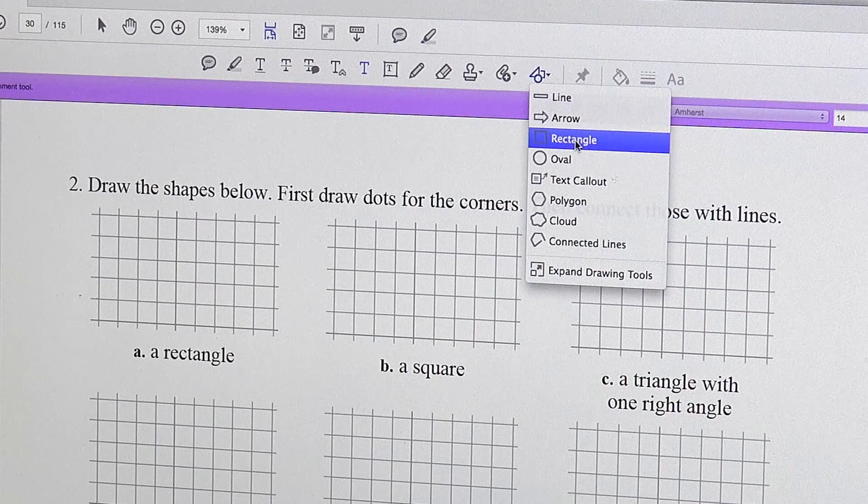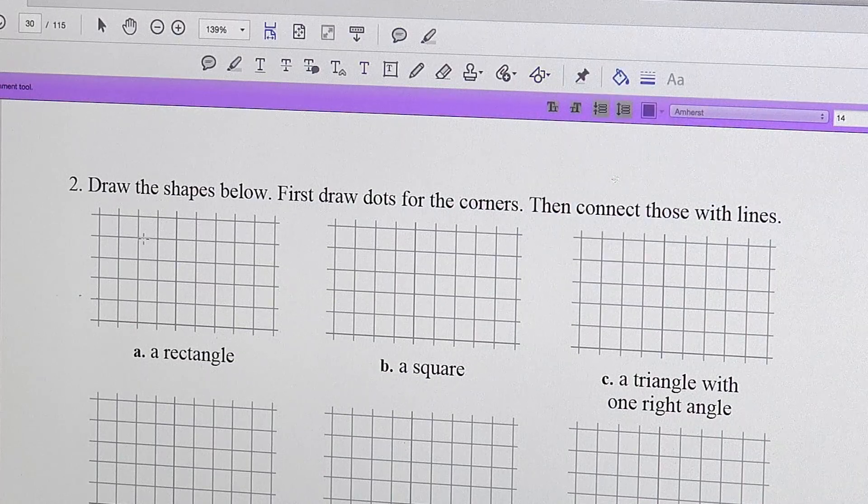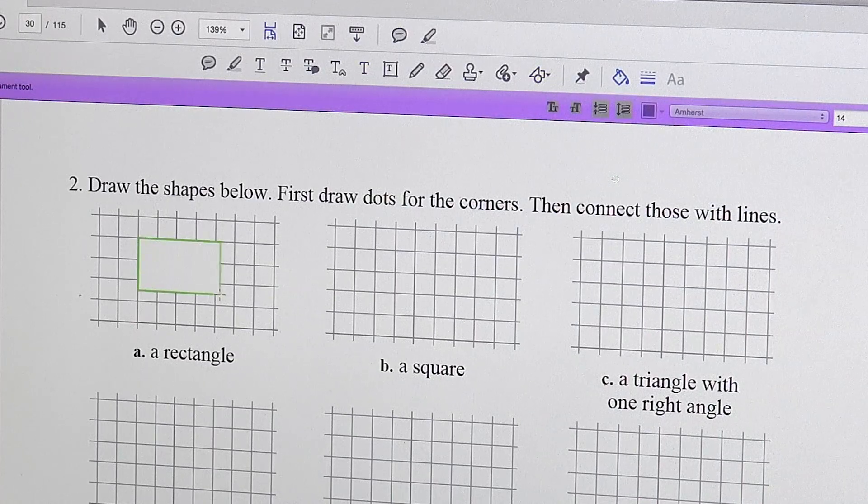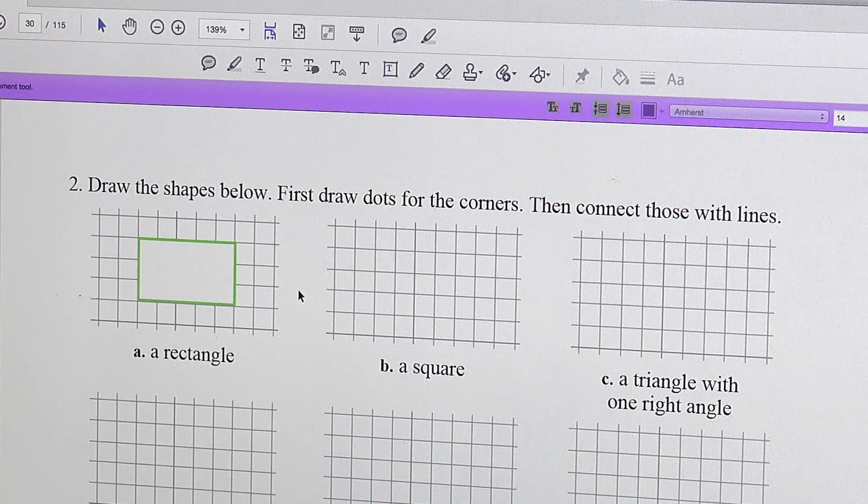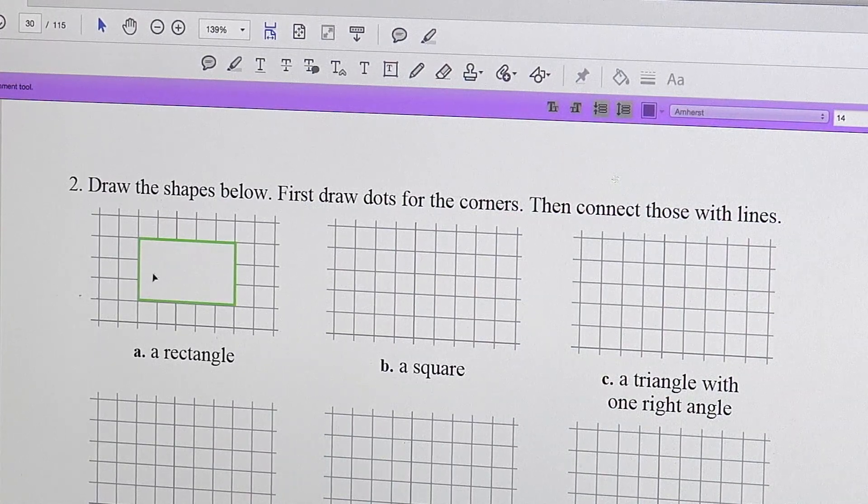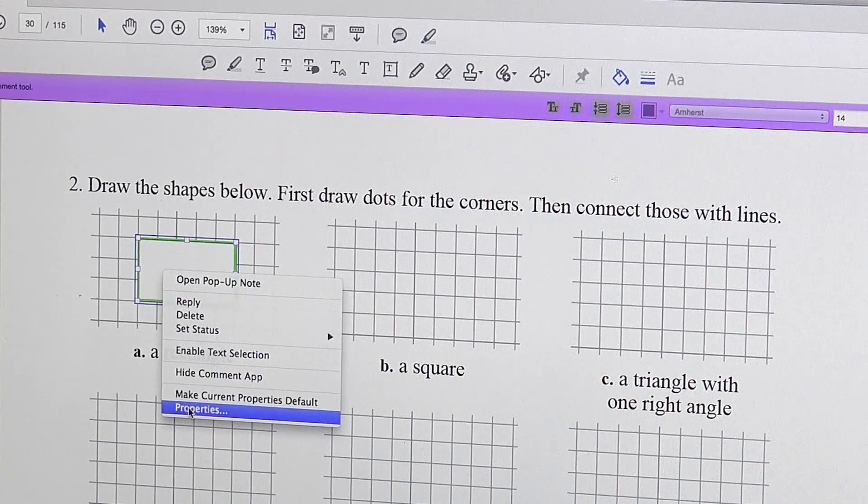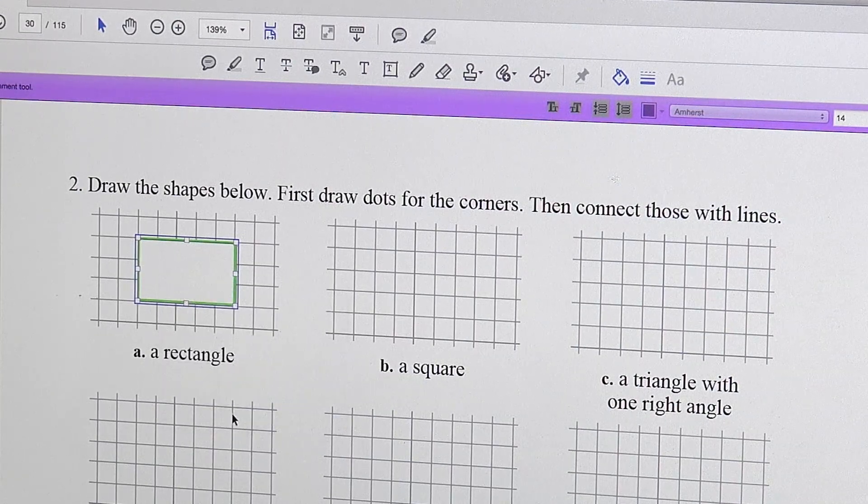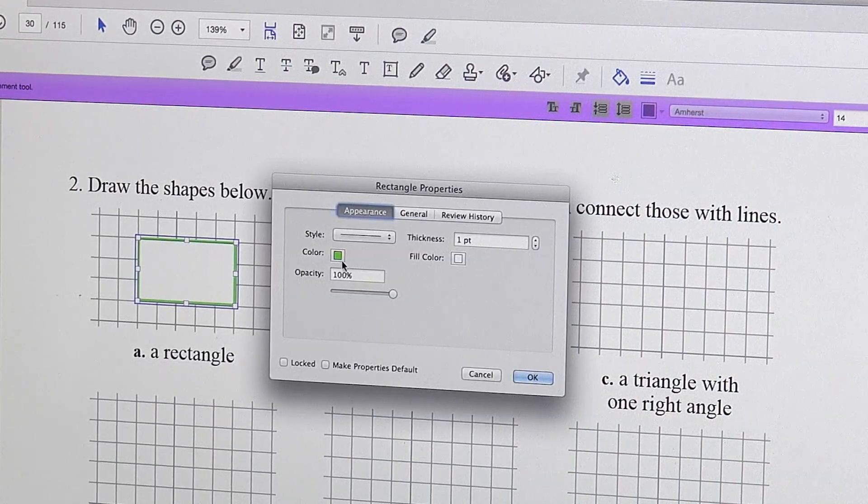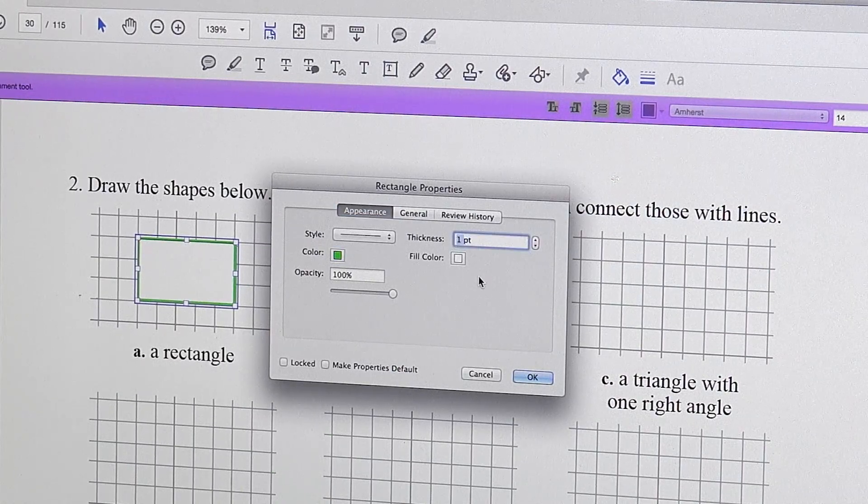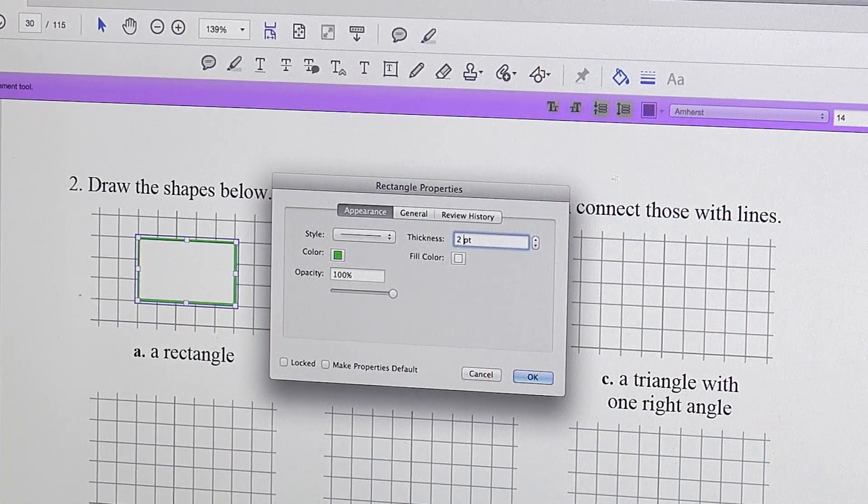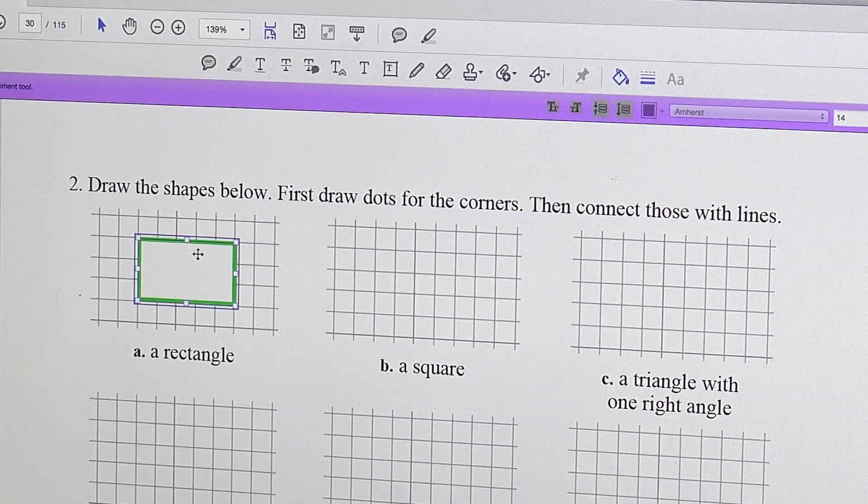So let's choose rectangle and then go here and drag and we got a rectangle. You can then click it, then right click it, go to properties and change the color or the thickness. Maybe I'll put it two points. Thick line and it's thicker.